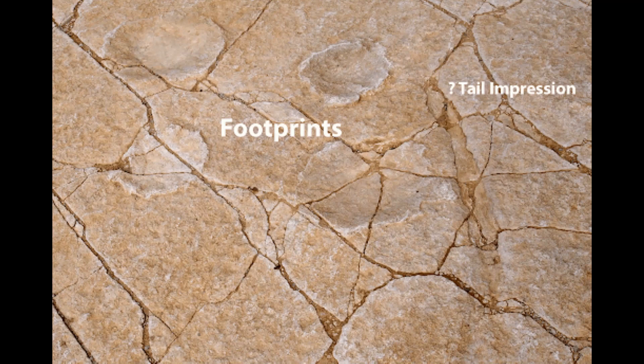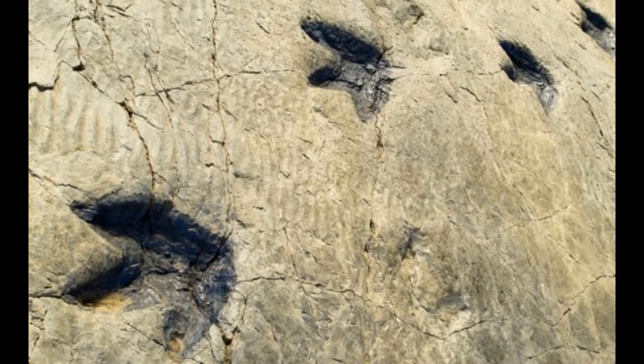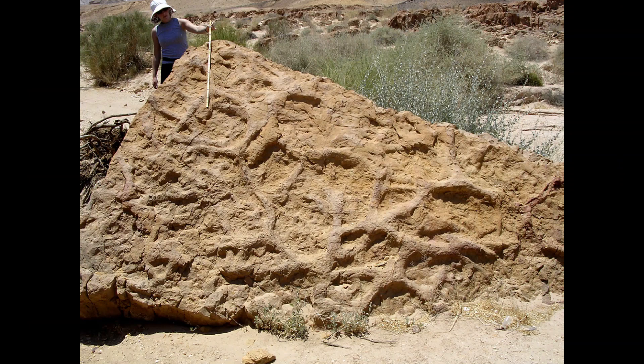I've also got another set of tracks here to show you, just to demonstrate the variation in types. We can obviously use the tracks that are left to work out what the organism looked like and get an idea of its size.